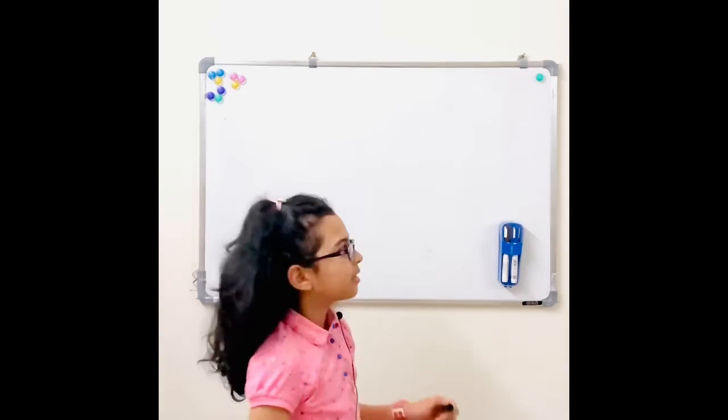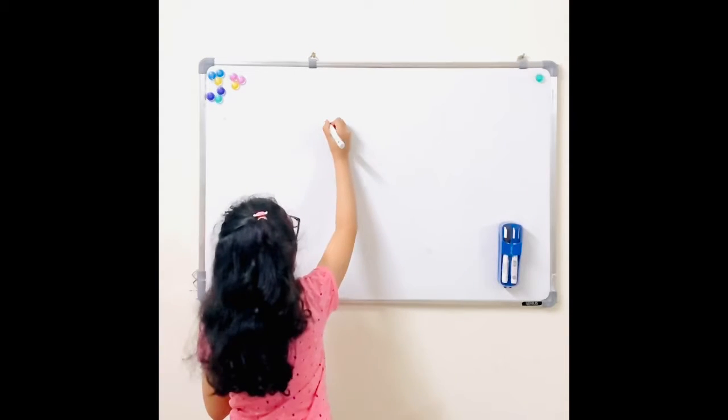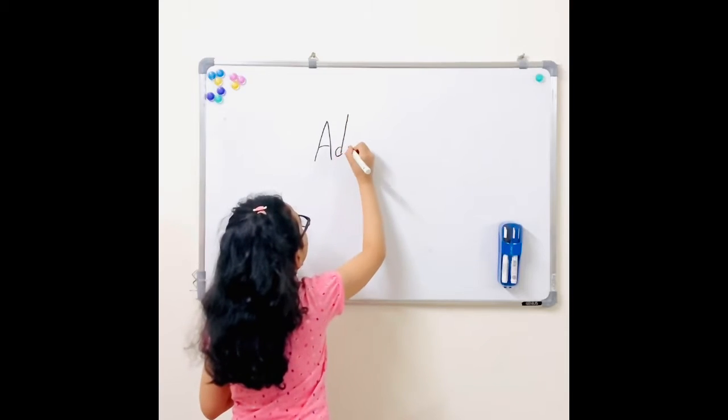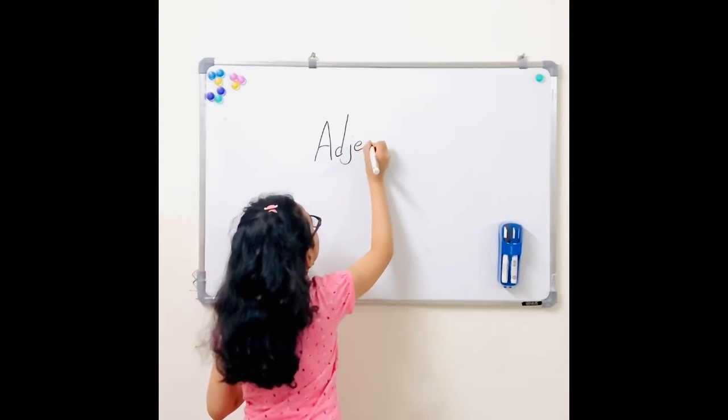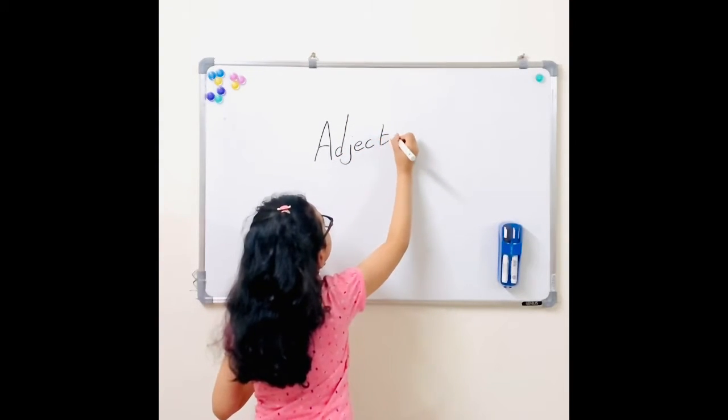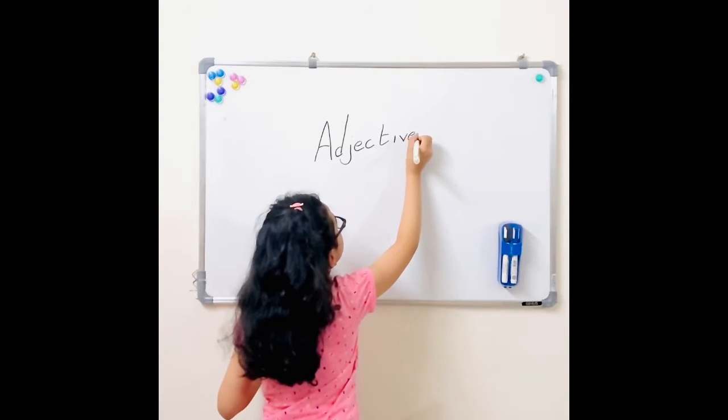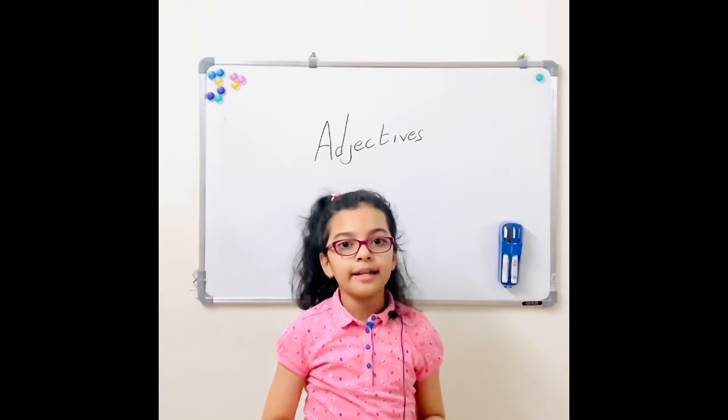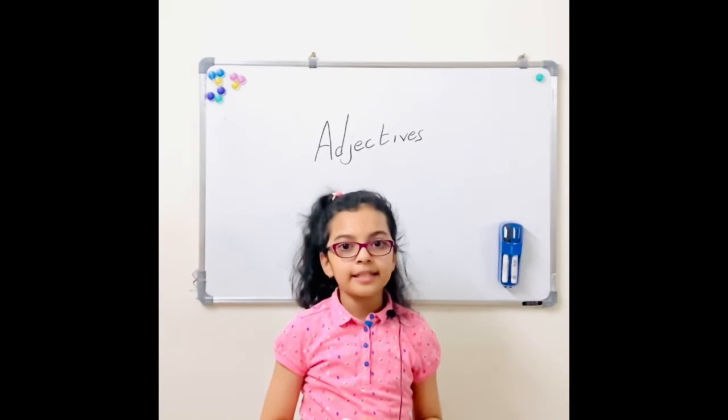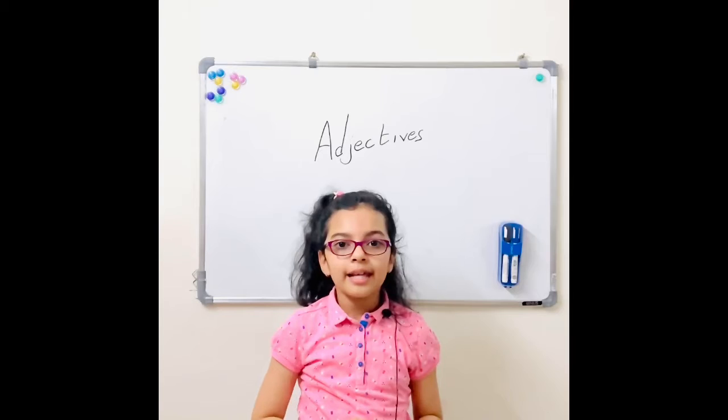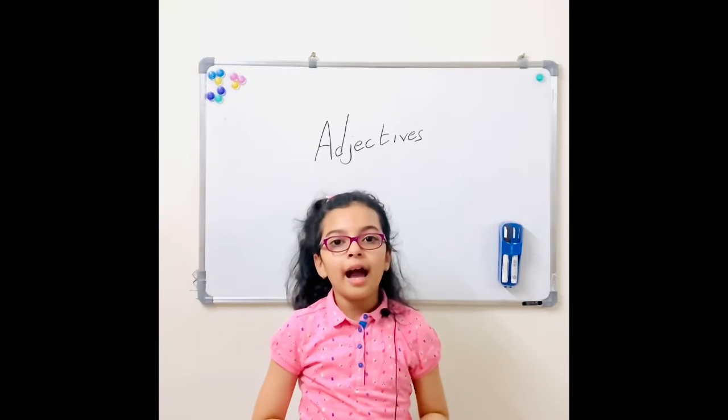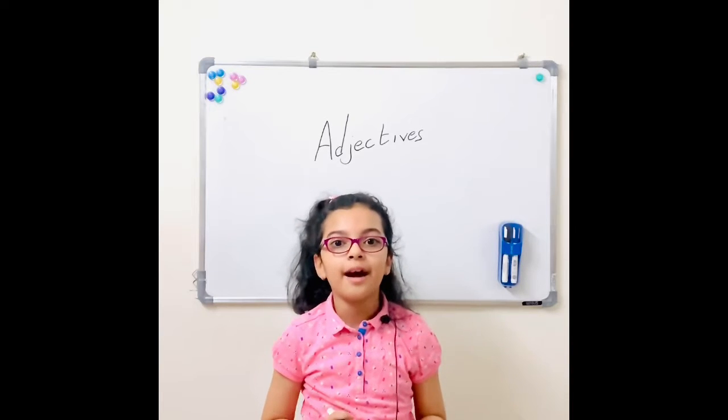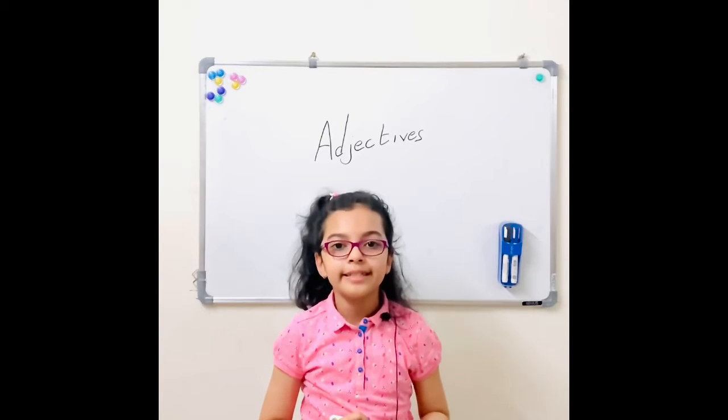So I'll write that on the board. Adjectives are words that describe a noun. Sometimes adjectives come before a noun, and sometimes they come after a verb. And sometimes it comes not only before a noun, but before a noun phrase too.